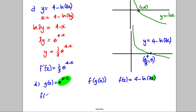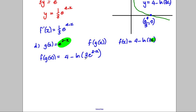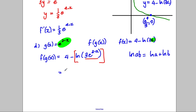So f of g of x is going to be equal to 4 subtract the natural logarithm of 3e to the 2 subtract x. Now I can use a log rule: log(ab) equals log(a) plus log(b). So I can split this up: it's 4 subtract the natural logarithm of 3 plus the natural logarithm of e to the 2 subtract x. Remember all of this is takeaway.